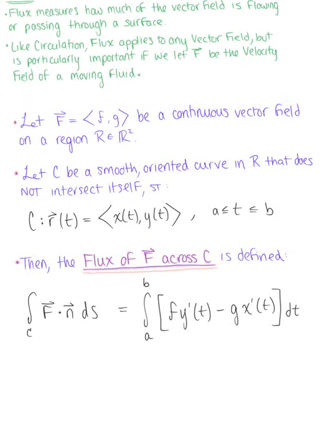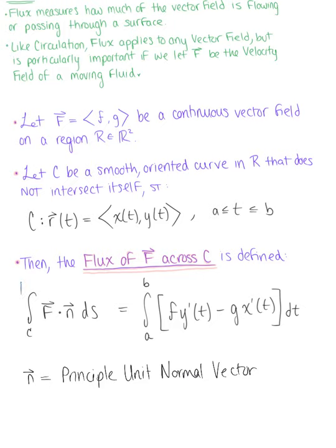Here vector N is the principal unit normal vector that we saw back in chapter 12. This is the vector line integral for computing flux.